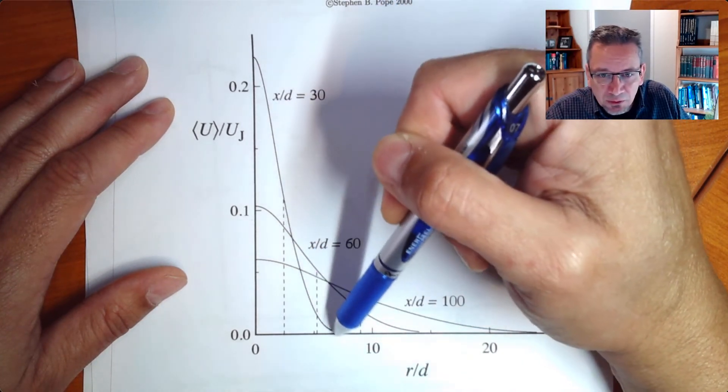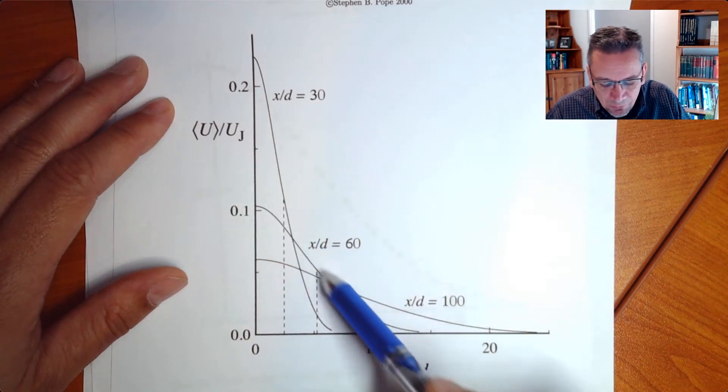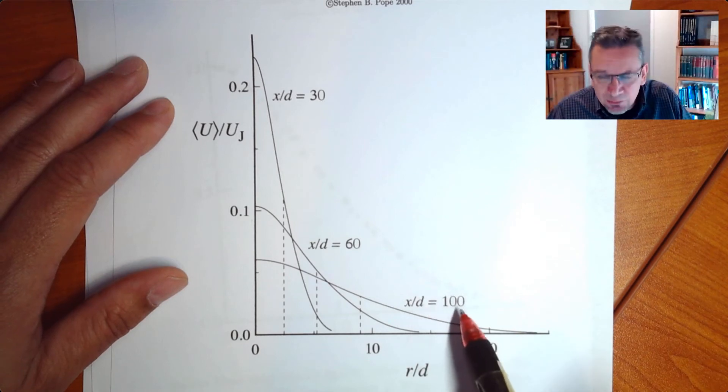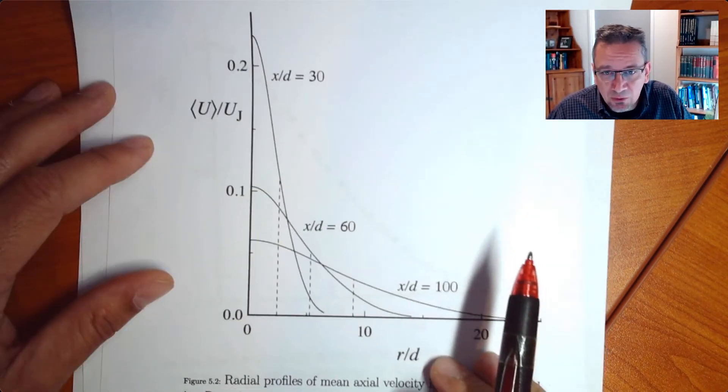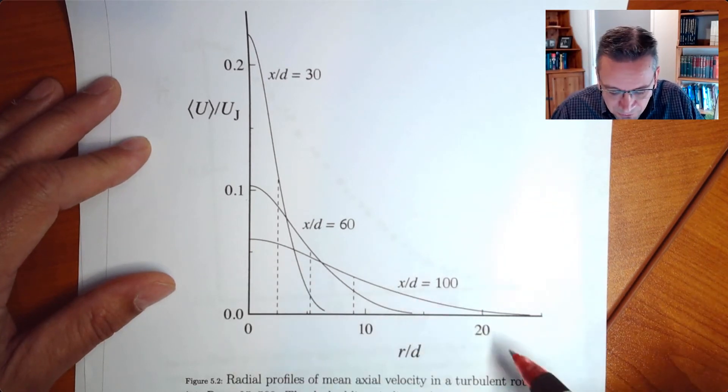And then the velocity goes down the further out you go to the radius. Then one for x over d equals 60 and another one for x over d equals 100. So x over d 100, you see it's quite far away from the jet already and you can still see the effect of the jet.